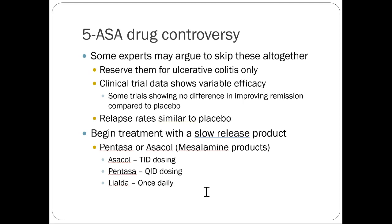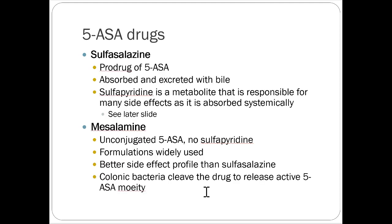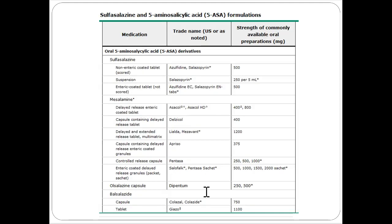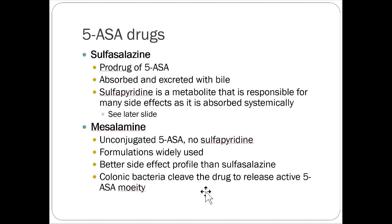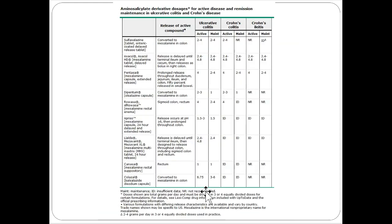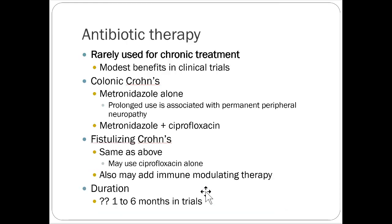For the Crohn's algorithm, we'll skip the 5-ASA drugs and come back to them for ulcerative colitis. The key ones to know are sulfasalazine and mesalamine as 5-ASA drugs.